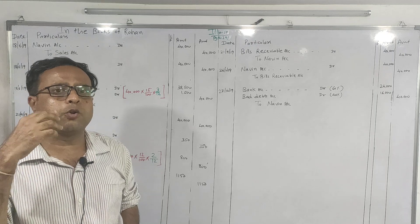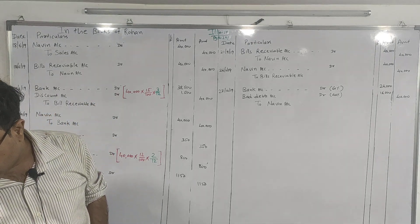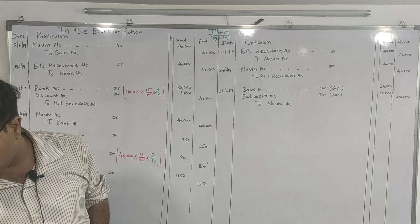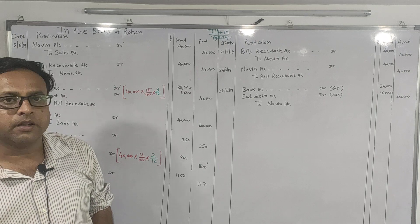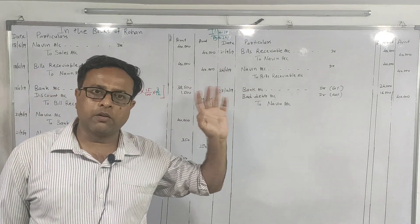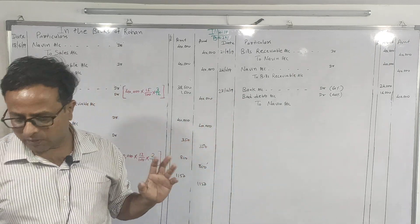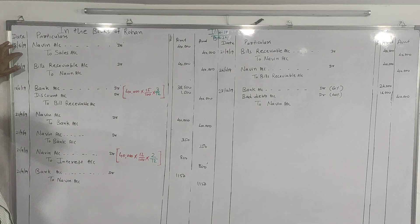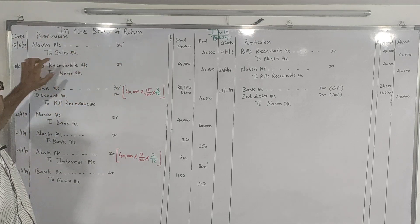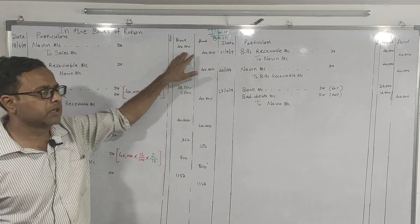Now how to find out who is the drawer — the pattern is the same. On 18th June 2019, Rohan sold goods on credit for ₹40,000 to Navin. The person who is selling the goods is always the drawer. So on 18th June Rohan sold goods to Navin, and the first entry is: Navin Dr. to Sales ₹40,000.